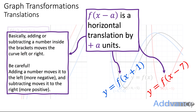Basically, adding or subtracting a number inside the brackets moves the curve left or right. Be really careful here — adding a number moves it to the left, making it more negative, and subtracting moves it to the right, more positive. It goes in the opposite direction with this one, so be really careful.